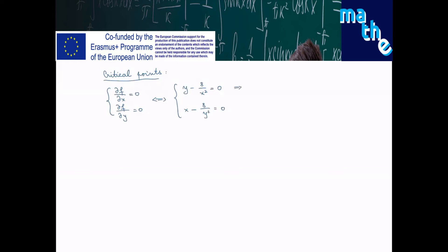From this relation we get that y is 8 over x² and x is equal to 8 over y². But this means that x²y equals 8 and similarly y²x equals 8.